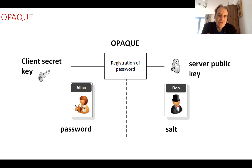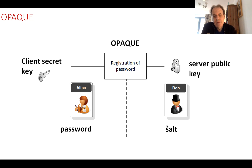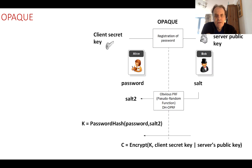With OPAQUE there is a registration phase for the password which generates a key pair: a client secret and a server public key. Bob will only hold the salt value and Alice will only hold the password value. Alice will never determine the salt value and Bob will never determine the password.